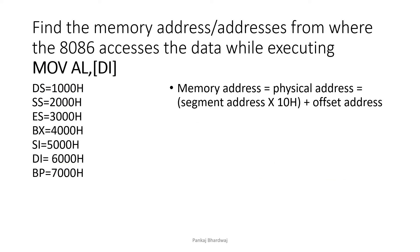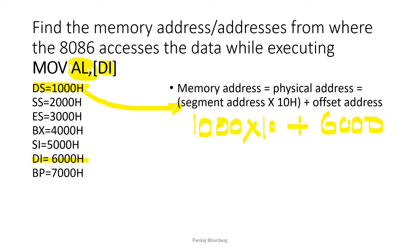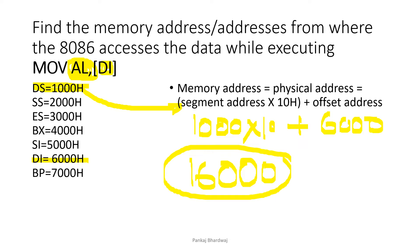Next is MOV AL,[DI]. AL is an 8-bit register, meaning only one memory location is needed. DI is the destination index register, which accesses the data segment as the segment address. Physical address = DS×10H + DI = 1000×10H + 6000H = 10000H + 6000H = 16000H. Since AL is 8-bit, only one memory location, 16000H, is accessed.